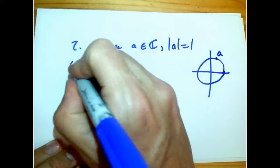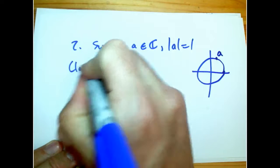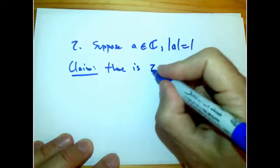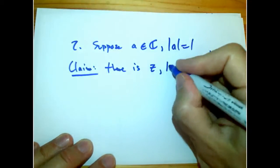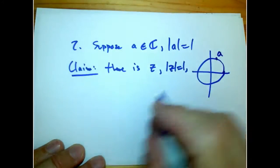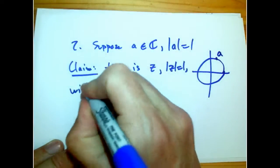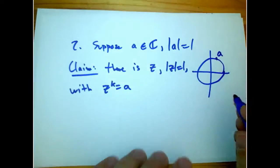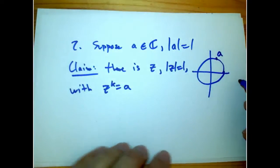Then, I claim that there is a z also with magnitude 1, with z^k equals a. So you can take the k-th root of anything on the unit circle.